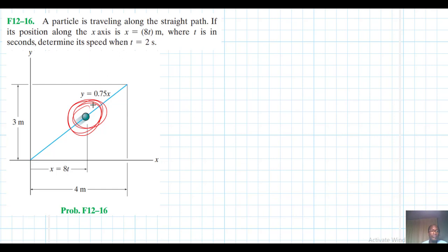So we need to find vx, which is also equal to x dot. This is the velocity in the x direction. We need to find vy, which is also y dot. This is also equal to dx dt. This is dy dt. Then later on, we'll find velocity itself.